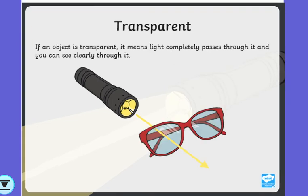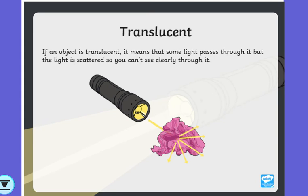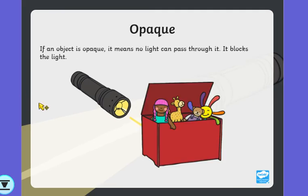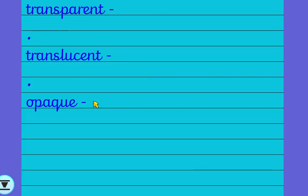So let's just go back. Transparent means that light can pass completely through it. Translucent means that some light passes through it. And opaque means no light can pass through it. So take a little moment now and pause the video. There are our three words — I'd like you to tell me in a phrase. If something is transparent, does that mean all the light passes through, some of the light passes through, or none of the light passes through?